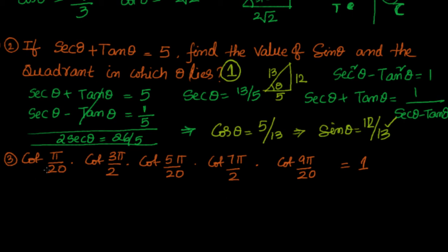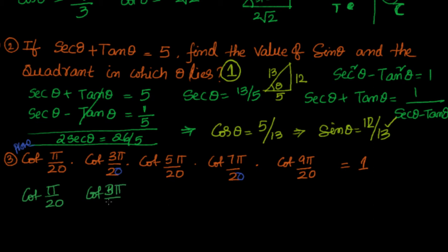Now we need to prove that cot(π/20) · cot(3π/20) · cot(5π/20) · cot(7π/20) · cot(9π/20) equals 1. Note that π/20 equals 9 degrees, and cot(5π/20) equals cot(45°) which equals 1. Since that middle term is 1, the remaining terms must cancel each other out.